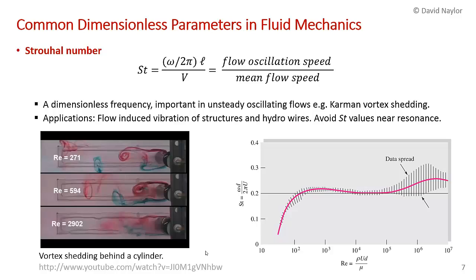Another important number in fluid mechanics is the Strouhal number. It's really a dimensionless frequency. It comes up in unsteady oscillating flows. You've seen this in the vortex shedding, the von Karman vortex street behind the cylinder. You've also seen it in the oscillation of the bridge at Tacoma Narrows that ultimately destroyed the bridge. It has important applications in flow-induced vibrations of structures and even hydro wires. You particularly want to avoid a frequency that is near the resonance, because if it's applied at the resonant frequency, the amplitude builds up substantially.